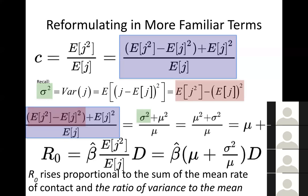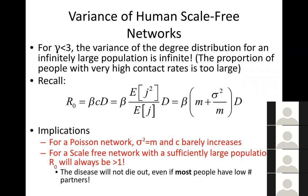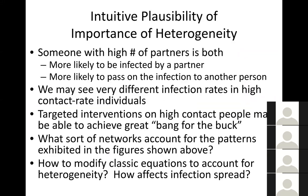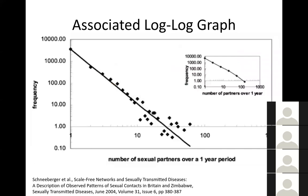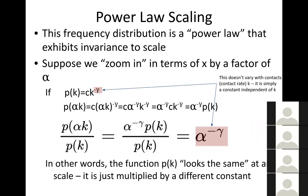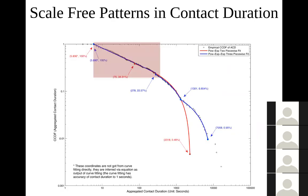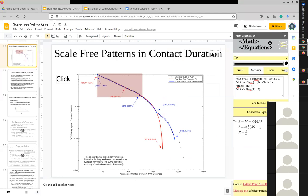That's all we have time for on scale-free networks. The key points to remember: the log-log plot goes down proportional to k^(-γ); the ratio of having twice the number of contacts to that number is the same no matter how large k is; there are heavy tails; and it's the variance — the disparity in contacts — that drives rapid disease spread, not just the average case.